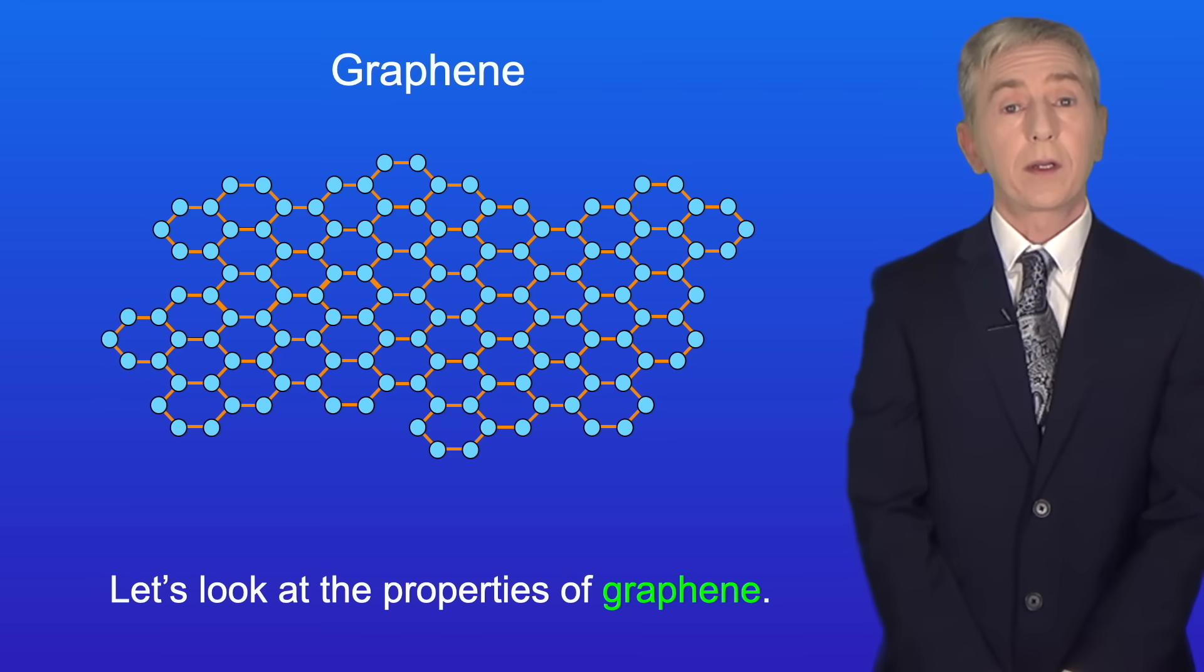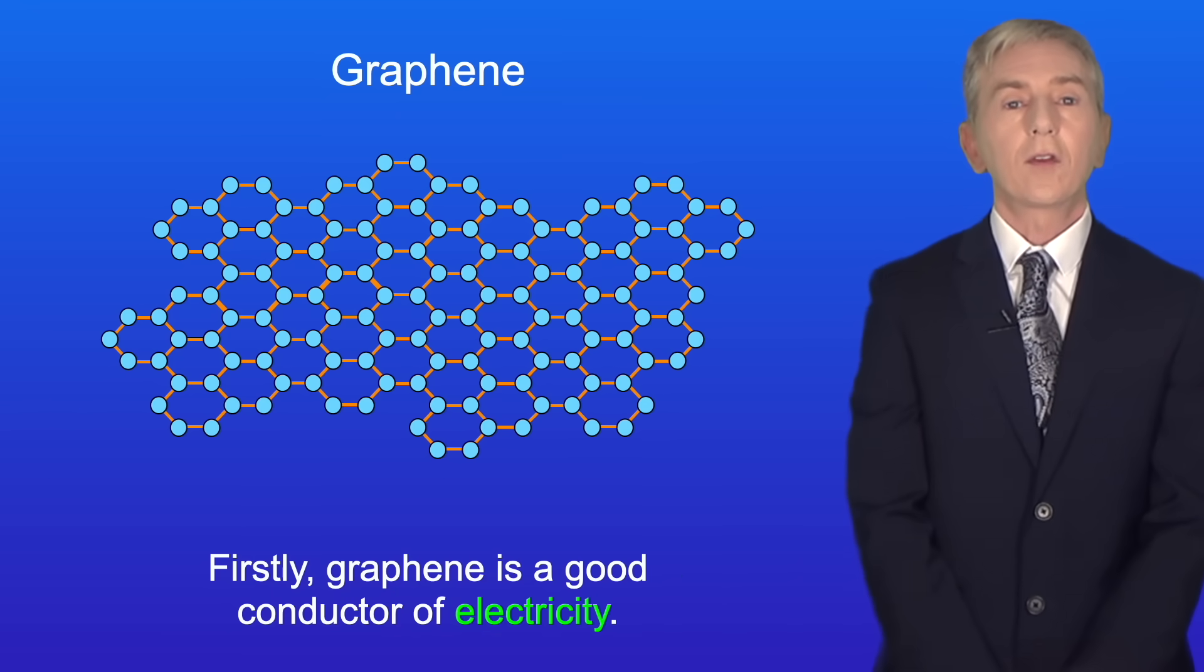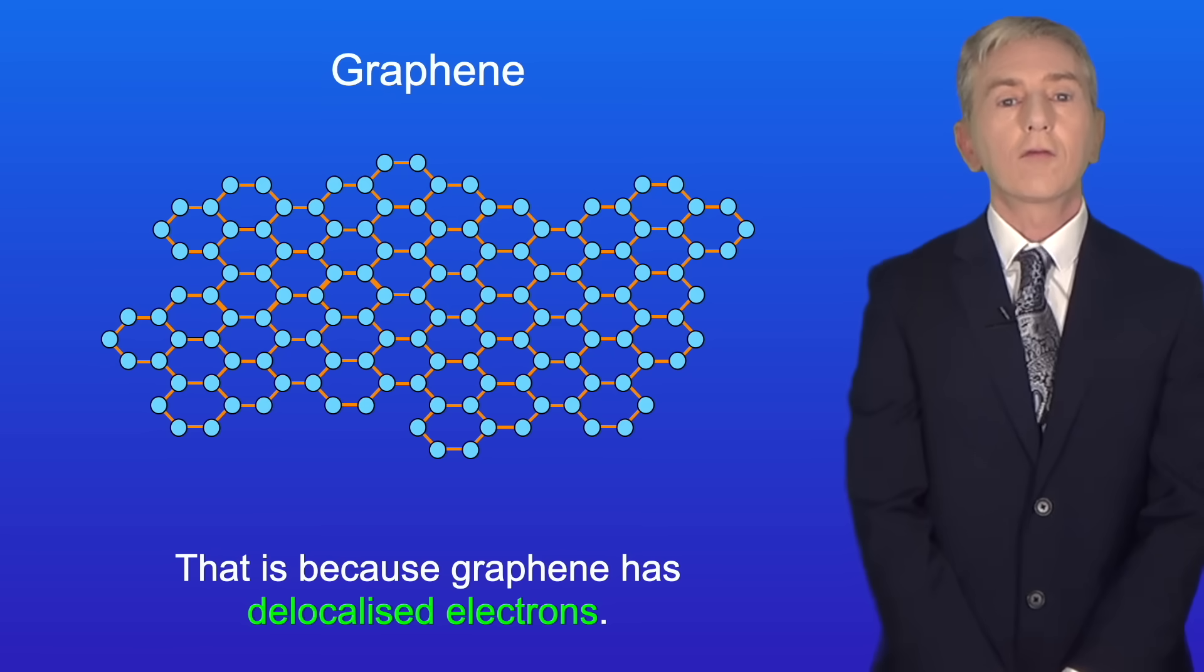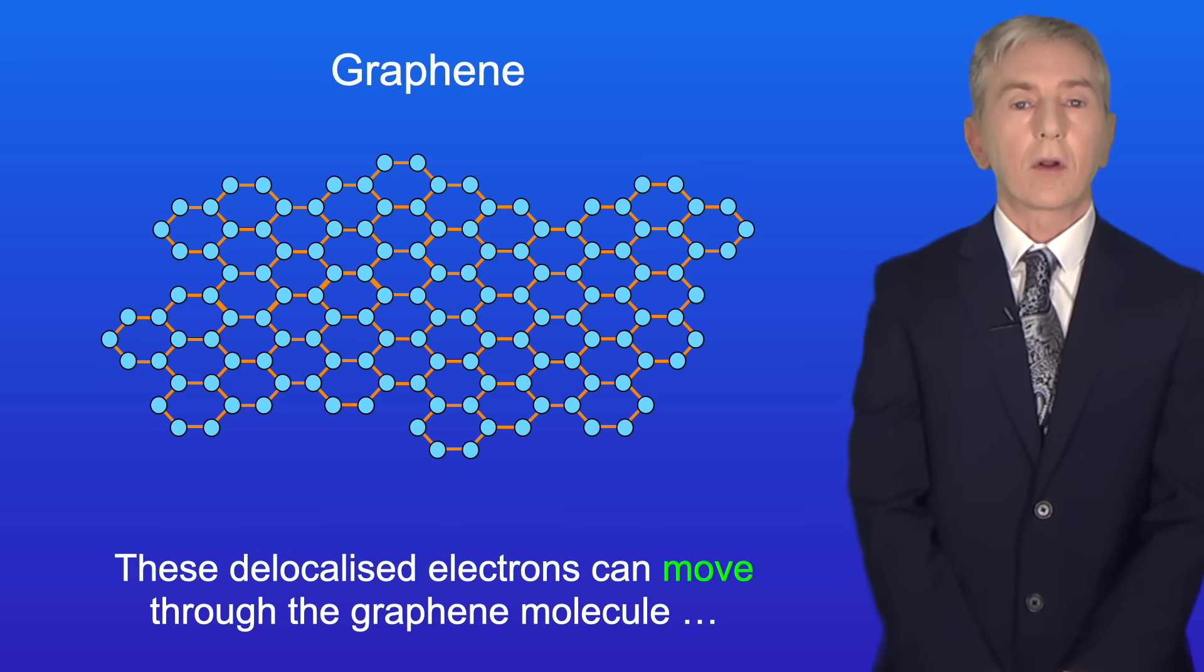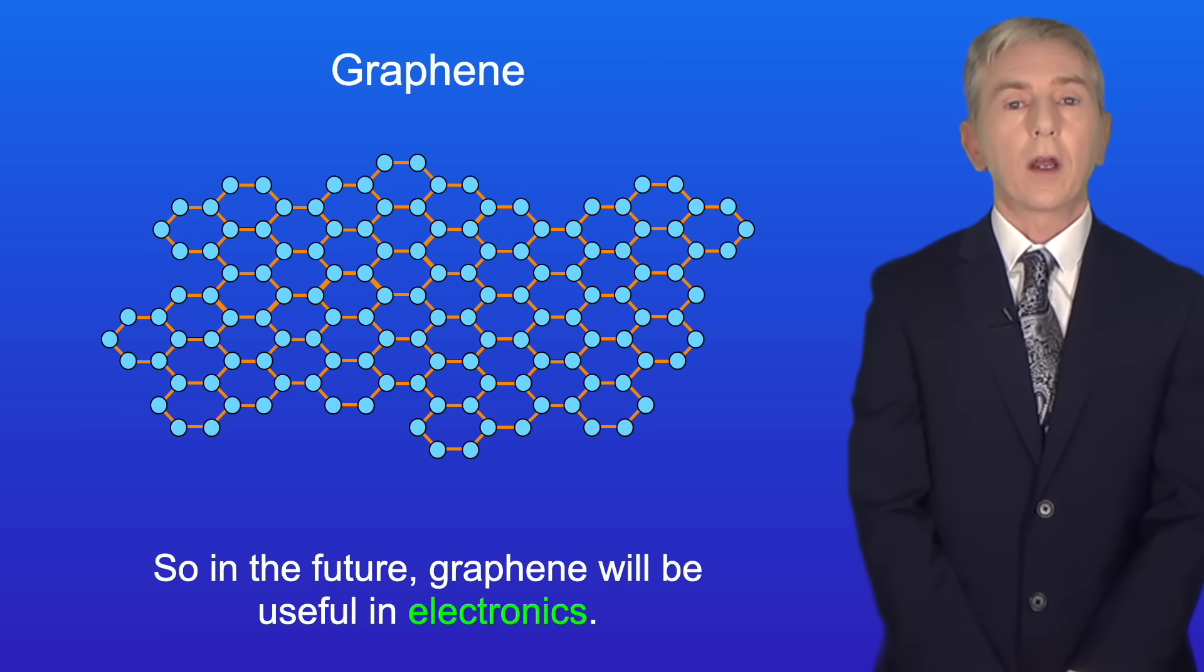So let's look at the properties of graphene. Firstly, graphene is a good conductor of electricity. That's because graphene has delocalized electrons. These delocalized electrons can move through the graphene molecule carrying electrical charge. So in the future graphene will be useful in electronics.